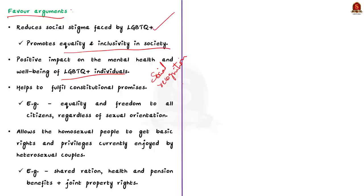Thirdly, legalizing same-sex marriage will help fulfill the promises made in the Constitution. The Indian Constitution guarantees equality and freedom to all citizens regardless of their sexual orientation, and legalizing same-sex marriages would meet these constitutional principles. Fourthly, it would allow homosexual people to get basic rights and privileges currently enjoyed by heterosexual couples, such as shared ration, health and pension benefits, as well as joint property rights.